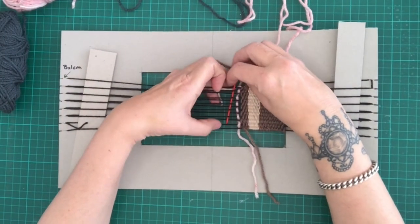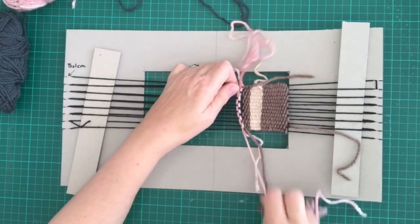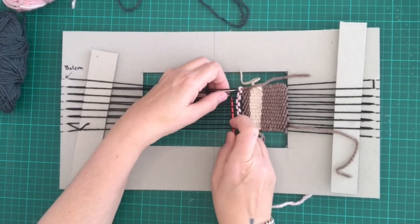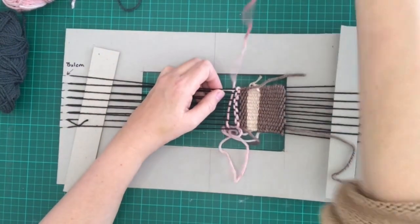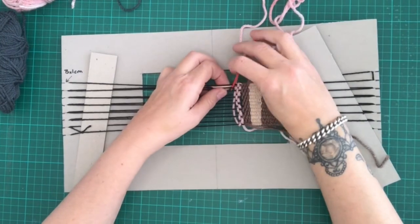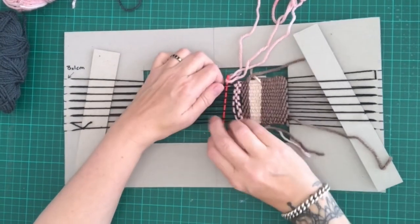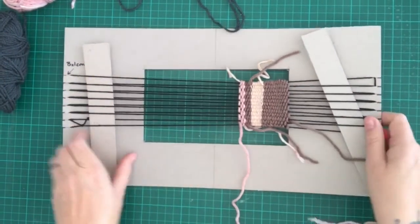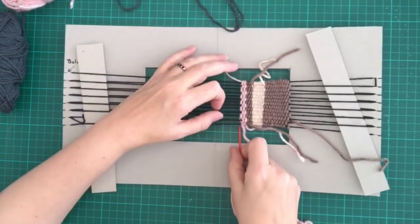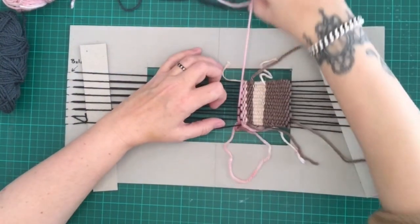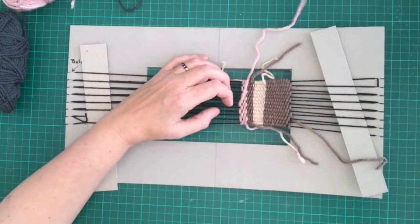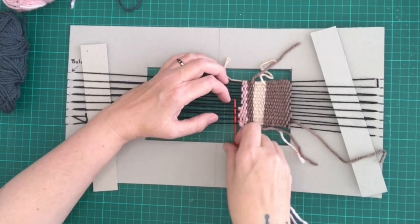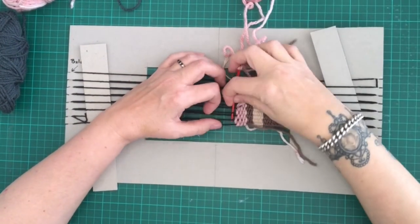In this part of the weaving I'm going to do something a little bit different with the pink. I'm going to create a step in the design. I'm going to weave a few rows of the pink. Then push it together so it's nice and tightly woven. And I'm going to only thread through the first five strings of my loom. This will mean it creates a step in the pattern.